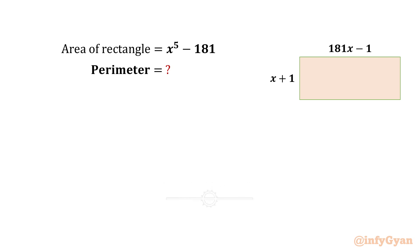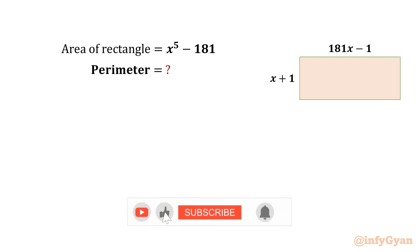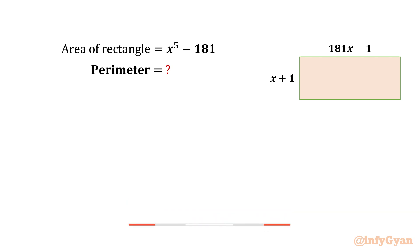Hello everyone, welcome back to InfiGyaan. In this video we are going to solve one very interesting question. Here we have one rectangle whose length is 181x minus 1 and width is x plus 1. The area of this rectangle is given as x to the power 5 minus 181. Then we have to find out the perimeter of this rectangle.